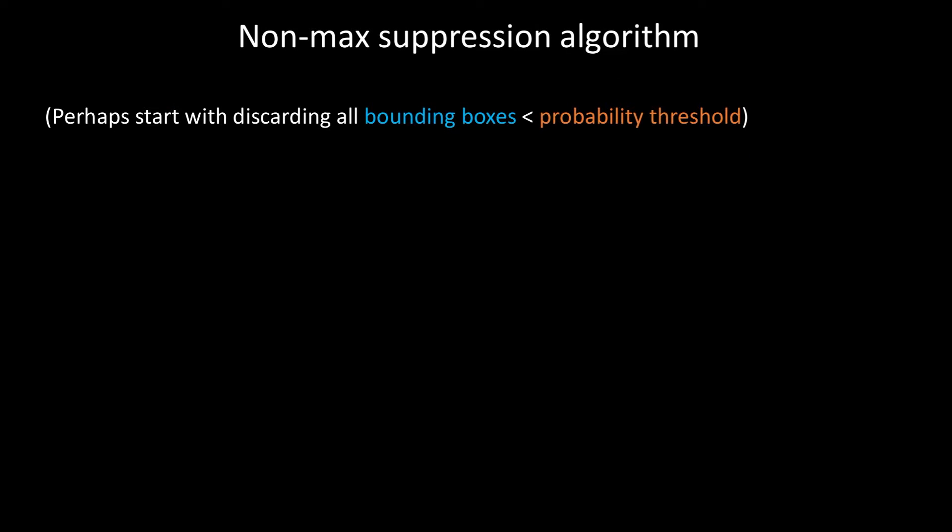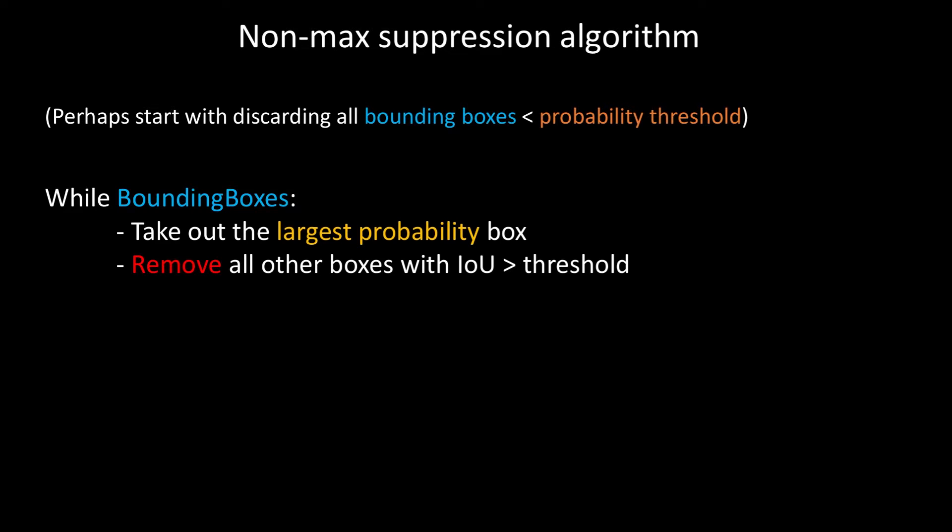To summarize the non-max suppression algorithm: first, before doing anything, we discard bounding boxes with a probability below some threshold — maybe if the model predicts a 1% probability of an object, we don't consider those. So we pick some probability threshold, say 0.2. Then, while we have bounding boxes, we take out the largest probability box and remove all other boxes with an IOU greater than some threshold. We need to remember to do this for each class separately. That was an overview of non-max suppression — the details will become much clearer when we implement it. Let's move over and implement this in PyTorch.